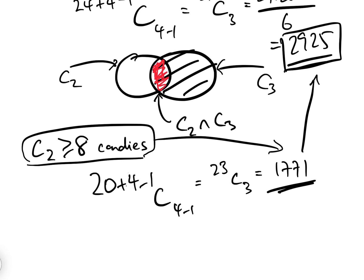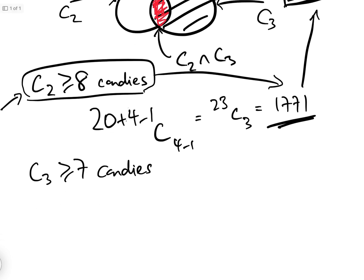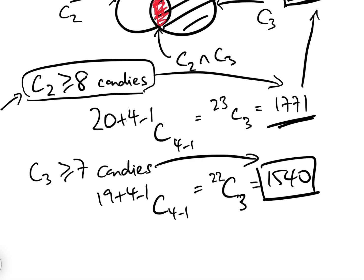What about the third thing, when we have C3 is going to have greater than or equal to 7 candies? Well, if we give C3 seven candies, and we've got to give C2 at least 4, then we've now given 11 candies away, which means we have 19 candies left to split between the four of them, which will be 19 add 4 minus 1, C4 minus 1, which is 22C3, which equals 1540. So basically, C3 having greater than or equal to 7 candies, there are 1540 possibilities.